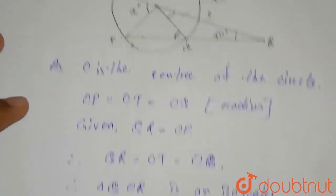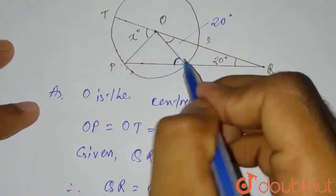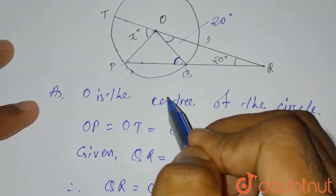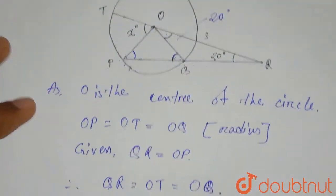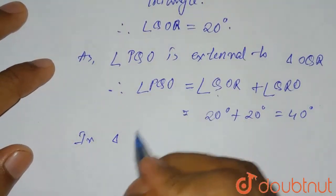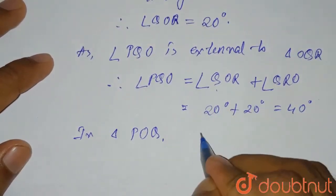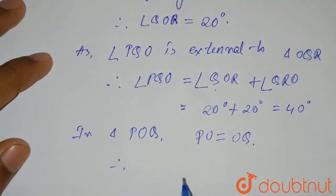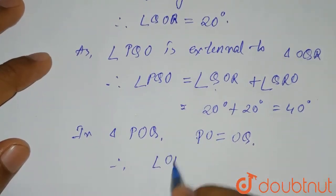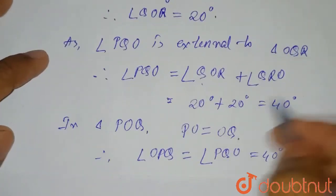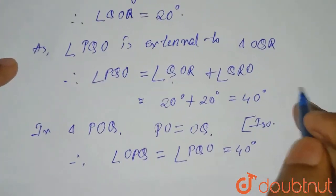We have seen that angle PQO is 40 degrees. Since PO equals OQ, triangle POQ is also isosceles. That means if angle PQO is 40 degrees, angle OPQ will also be 40 degrees. In triangle POQ, PO equals OQ, so therefore angle OPQ equals angle PQO equals 40 degrees, as the triangle is isosceles.